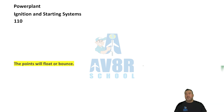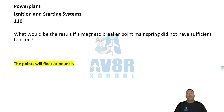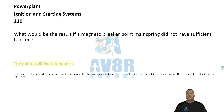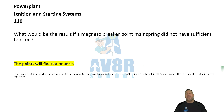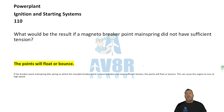Number 110. What would be the result if the magneto breaker point mainspring did not have sufficient tension? The points will float or bounce. If the magneto breaker points mainspring did not have sufficient tension, the points will float or bounce.